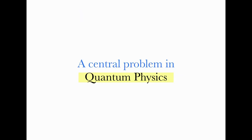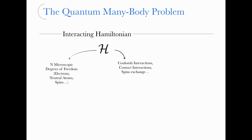First of all, what is the problem we would like to address with neural networks? Probably one of the most central problems in quantum physics and theoretical physics in general is the quantum many-body problem. This problem is easily stated: imagine that you have a Hamiltonian with a large number of microscopic degrees of freedom — for example, electrons, spins, whatever you prefer — and these microscopic degrees of freedom are strongly interacting.